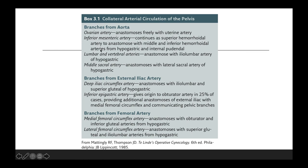Here is a summary of the collateral arterial circulation of the pelvis. Branches from the aorta include the ovarian artery and inferior mesenteric artery. The lumbar and vertebral artery includes the middle sacral artery. Branches from the external iliac artery include the deep iliac circumflex artery and the inferior epigastric artery. Branches from the femoral artery include the medial femoral circumflex artery and the lateral femoral circumflex artery.